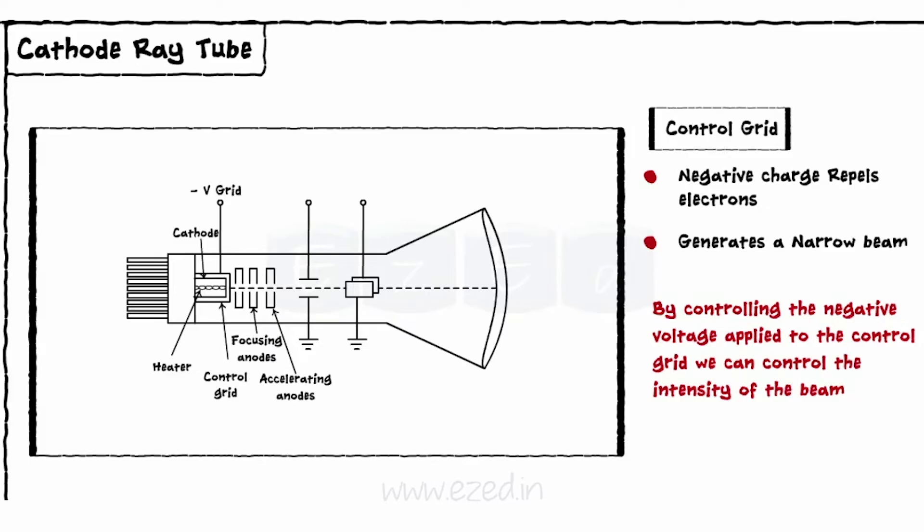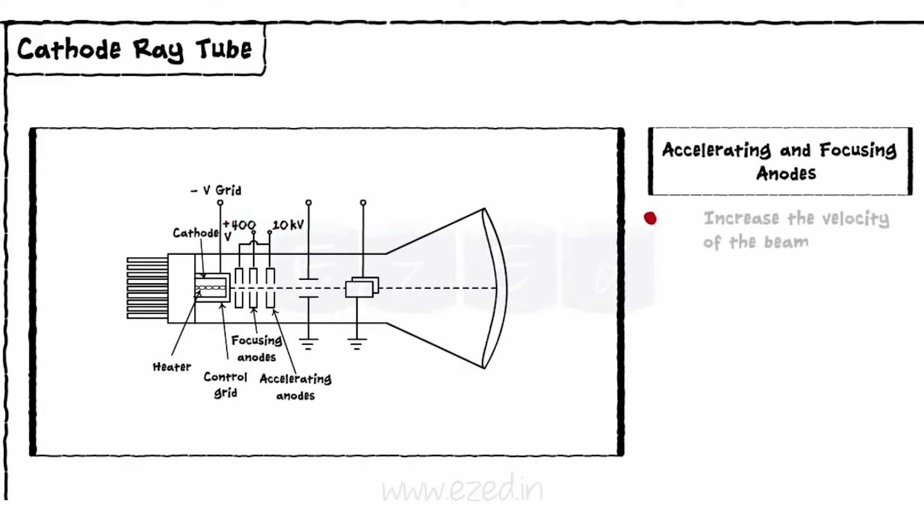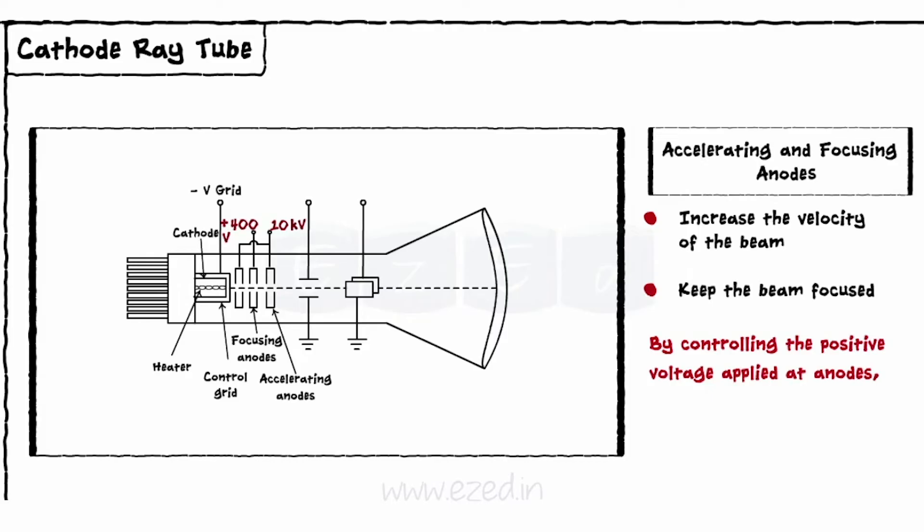This electron beam is then passed through a set of accelerating and focusing anodes. These anodes are supplied with high positive voltage and increase the velocity of the beam and keep the beam focused. Thus, by controlling the positive voltage applied at anodes, the focus of the beam can be controlled.